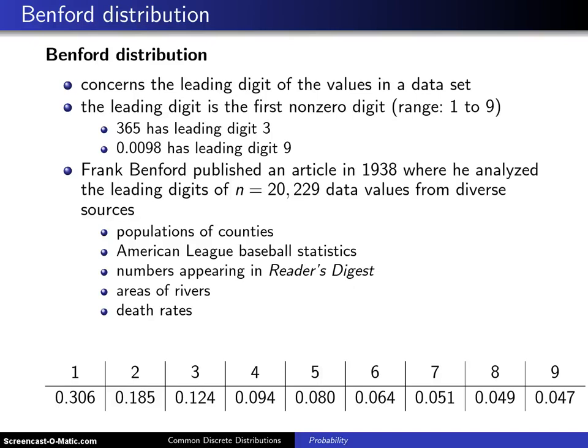Here is a second niche discrete distribution known as Benford's distribution. It concerns the leading digit of the values in a data set. The leading digit is the first non-zero digit that occurs.